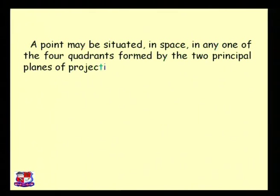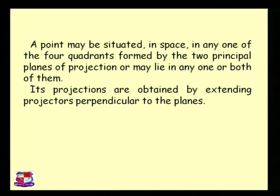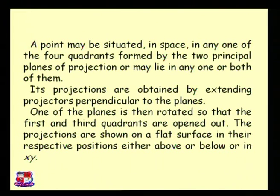A point may be situated in space in any of the four quadrants formed by the two principal planes of projection. It may lie on one or both planes — either on the horizontal plane or on the vertical plane. Its projections are obtained by extending projectors perpendicular to the plane. The two planes intersect perpendicularly, creating the XY line. One of the planes is then rotated so that the first and third quadrant are opened out. To see the horizontal plane component, we just need to rotate the component at 90 degrees to show it either above or below the XY line.